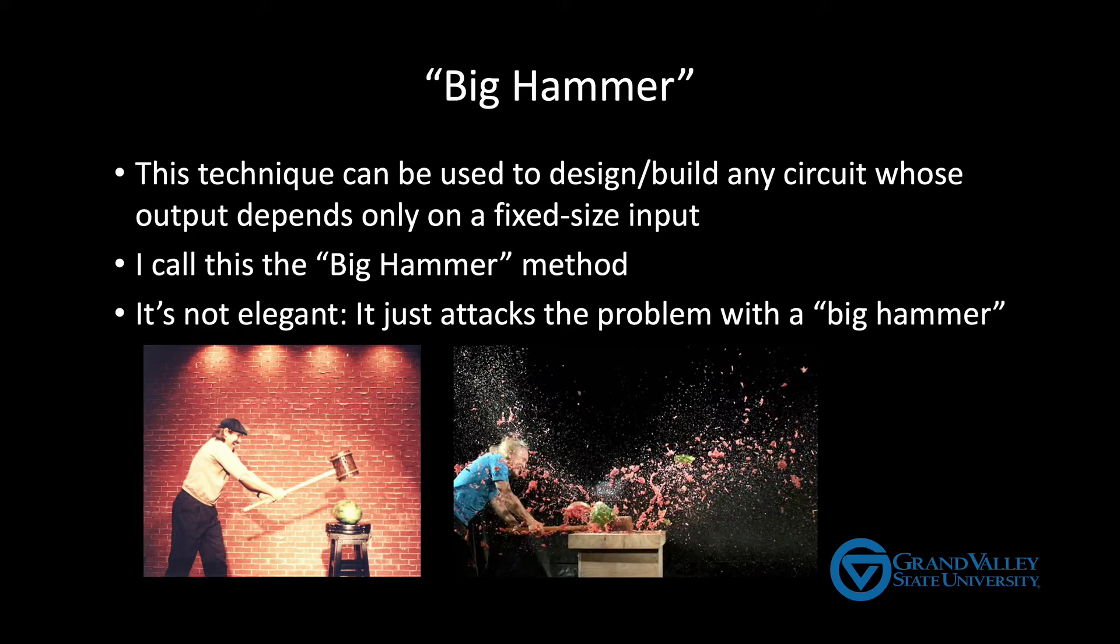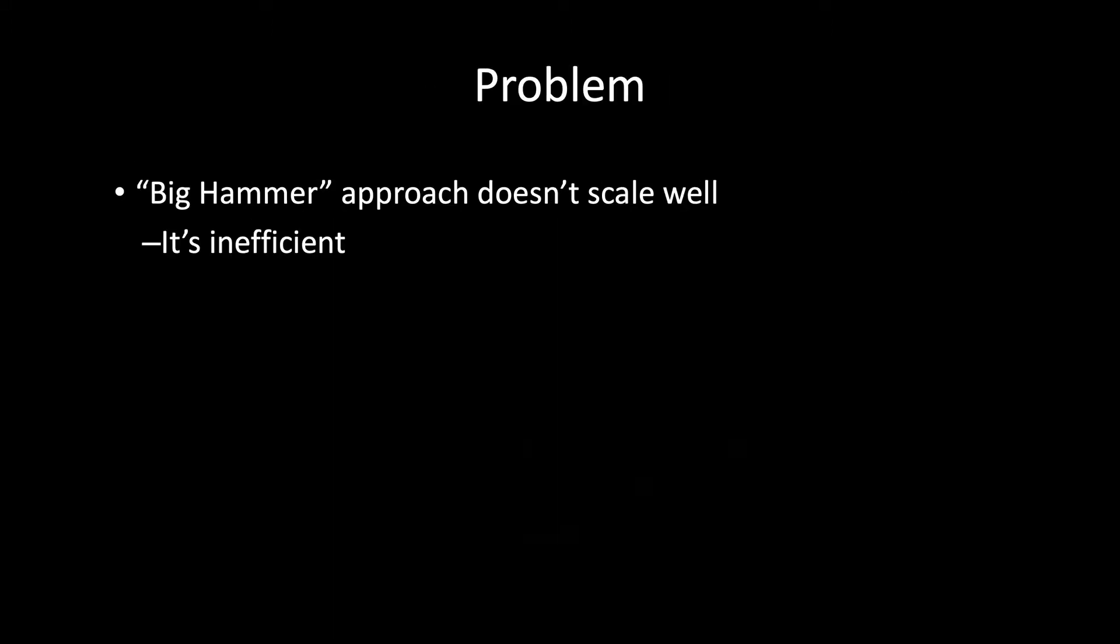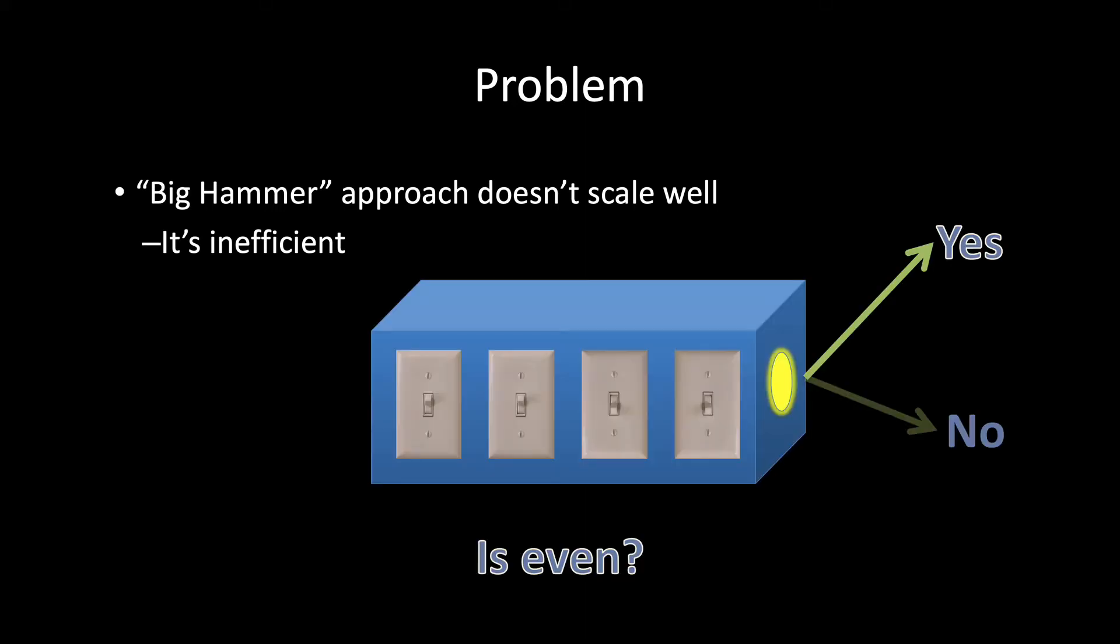Now the problem with this inelegant technique is that it doesn't scale well. The first problem is it's inefficient. So let me give you an extreme example. Let's say we want a circuit to tell us whether a 4-bit number is even or odd. Using this crude big hammer method would give us a circuit that looks something like this.